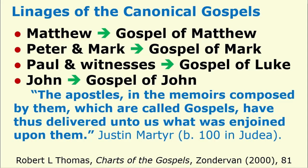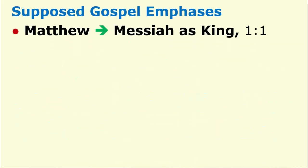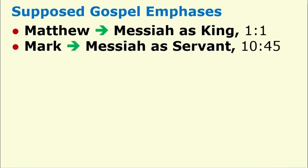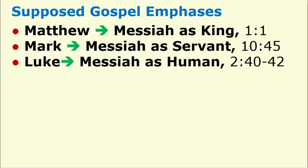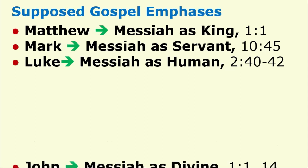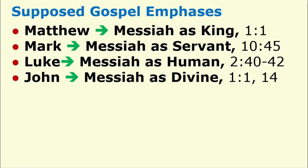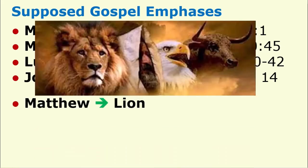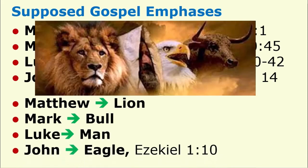Some like to suppose that each Gospel has a unique emphasis. Matthew presents the Messiah as the King; Mark, the Messiah as a servant; Luke, the Messiah as a human being; and John, the Messiah as a divine incarnation. Or, using Ezekiel's symbology, Matthew is the lion, Mark the bull, Luke the man, and John the eagle.